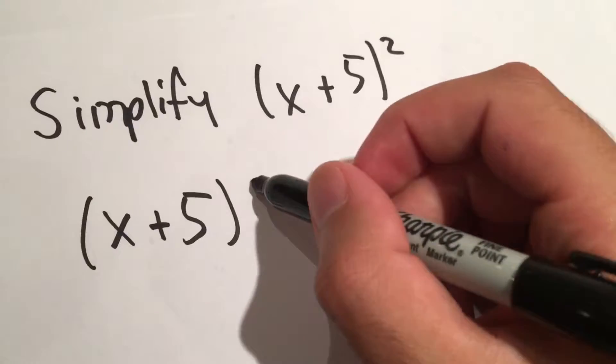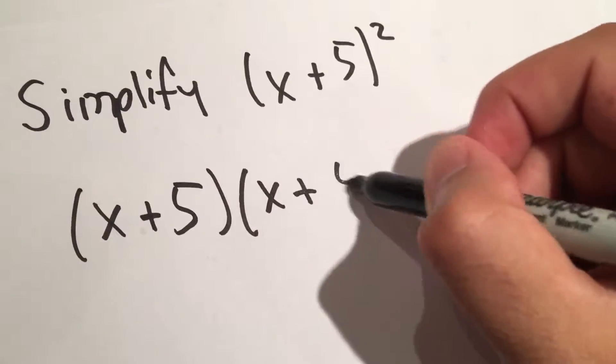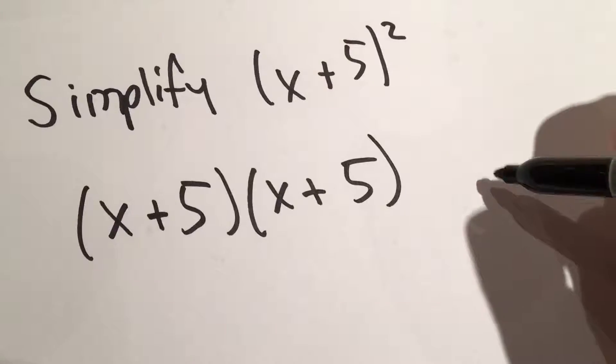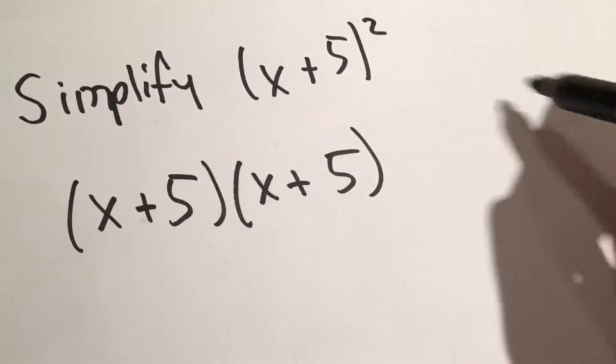So we take x plus 5, do it again, x plus 5. If there was a 3 here, we would add another one.